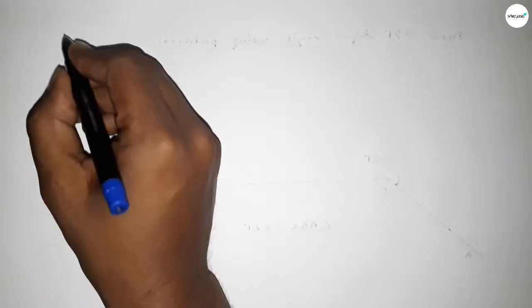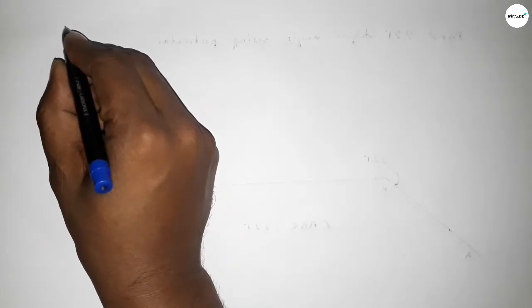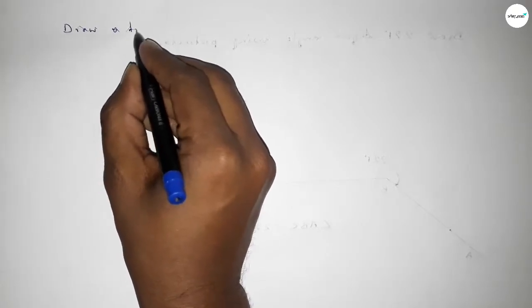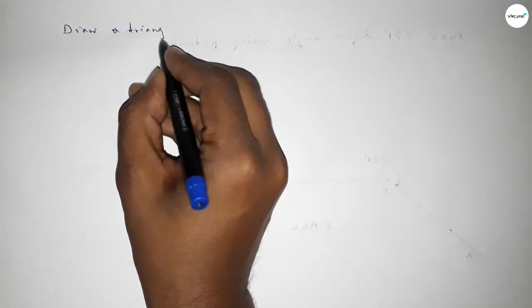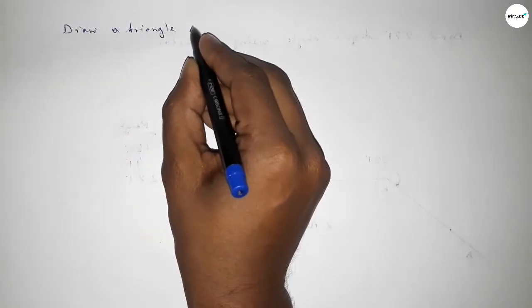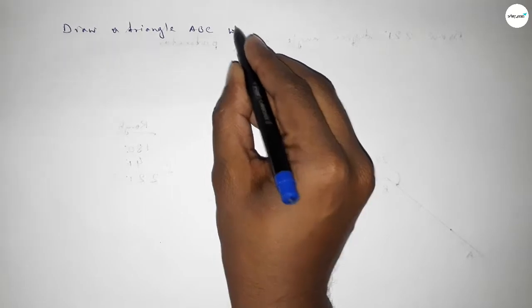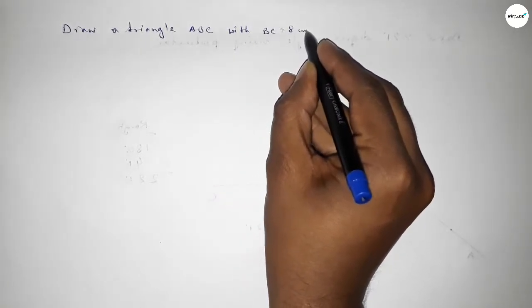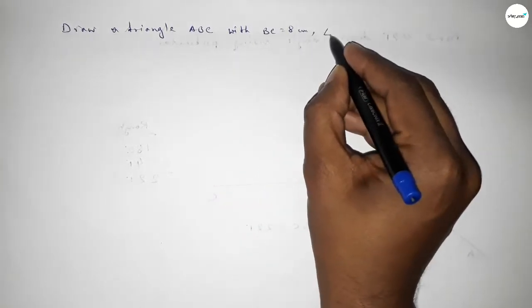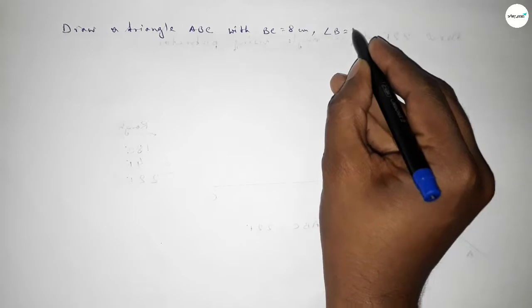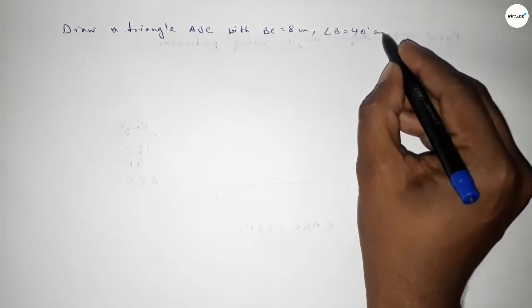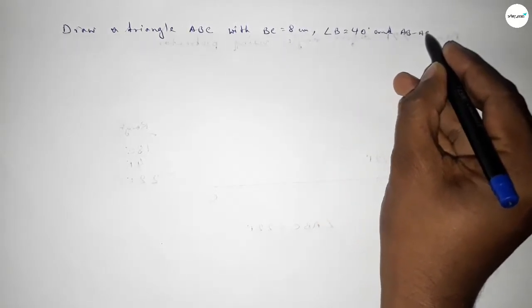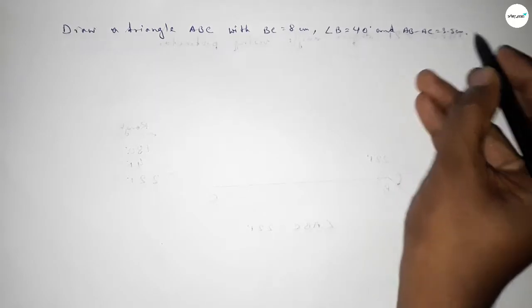Hi everyone, welcome to SI Share Classes. Today in this video we have to draw a triangle ABC with BC equal to 8 centimeters, angle B equal to 40 degrees, and AB minus AC equal to 3.5 centimeters. So let's start the video.